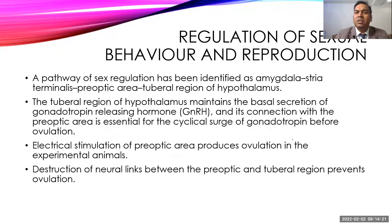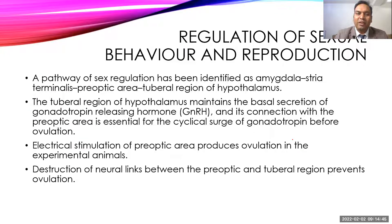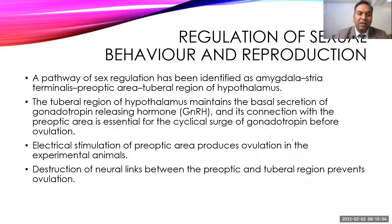Regarding regulation of sexual behavior and reproduction: the amygdala, stria terminalis, preoptic area, and tuberal region are considered pathways for sex regulation — how frequently one desires sexual activity. The tuberal hypothalamus maintains secretion of gonadotropin-releasing hormone (GnRH) and has a direct connection with the preoptic area, causing cyclical release of gonadotropins. Stimulation of the preoptic area directly can produce ovulation in experimental animals, and destruction of the preoptic and tuberal areas can prevent permanent ovulation.